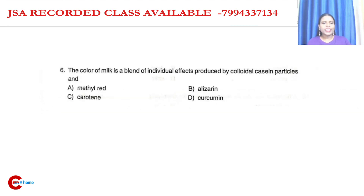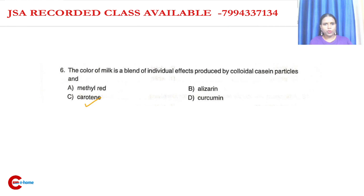Question number six: the color of milk is a blend of individual effects produced by colloidal casein particles and carotene. The answer is related to these components.